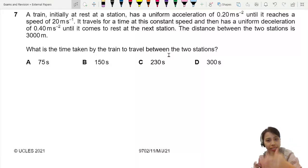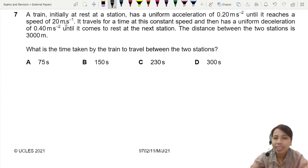A train initially at rest at the station has uniform acceleration of 0.2 until it reaches a speed of 20. Getting faster and faster. I think we should draw a graph for this. It might be very helpful for us later because it gets complicated. So we have a graph of velocity against time.